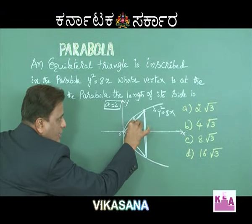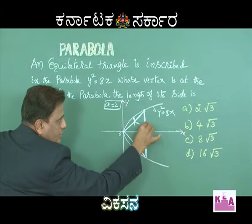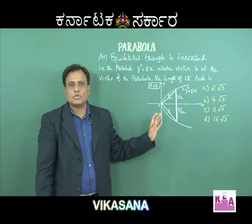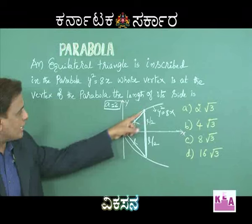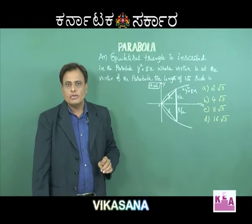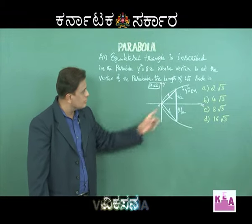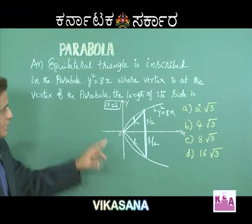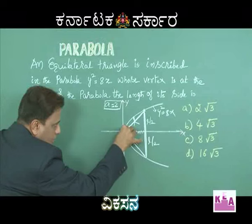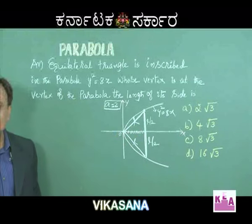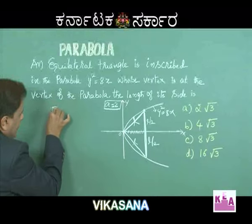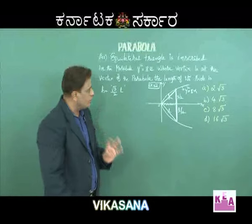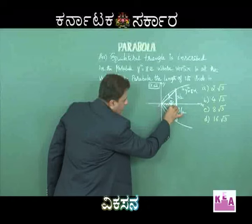Consider the length of the side of the equilateral triangle as L. Then by symmetry, half the base is L/2. This half-base L/2 is also called the double ordinate. The dotted line represents the height of the equilateral triangle. We know that the height of an equilateral triangle is (√3/2) × side, so the height is (√3/2)L.